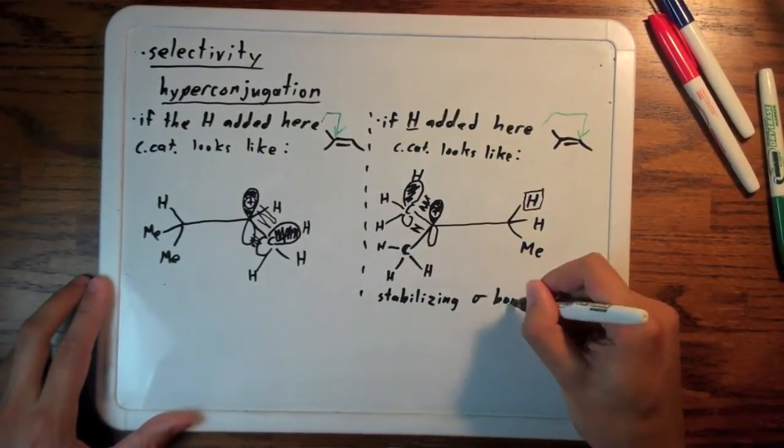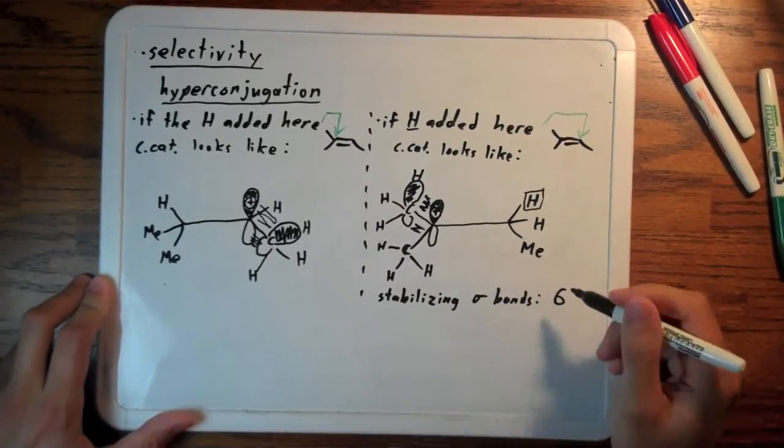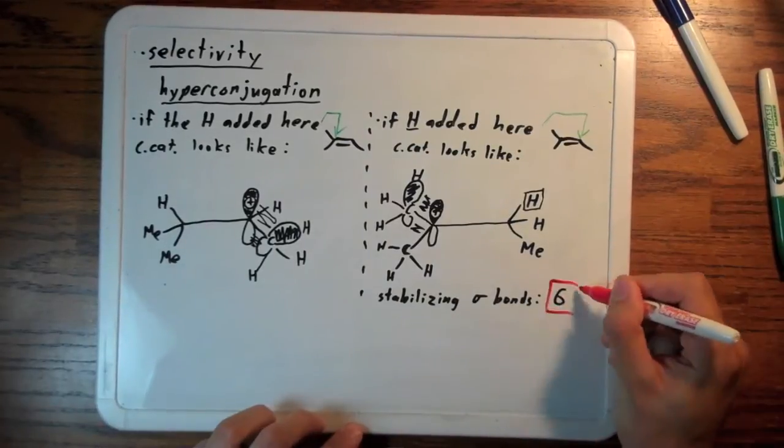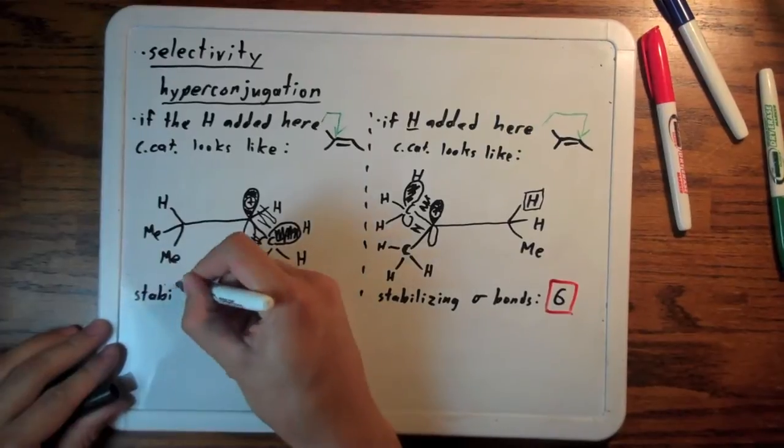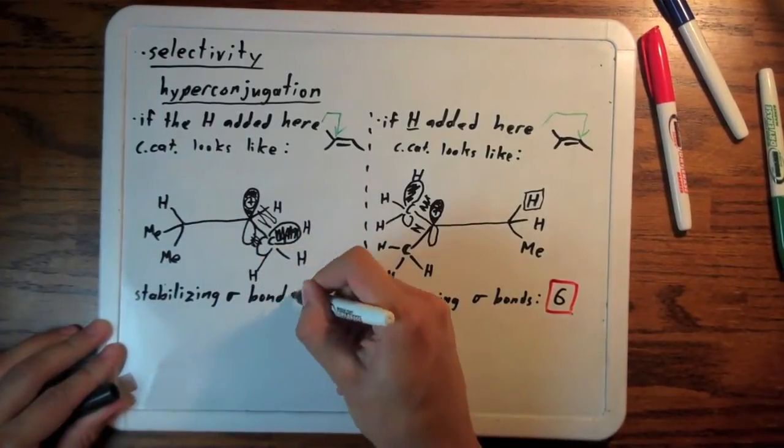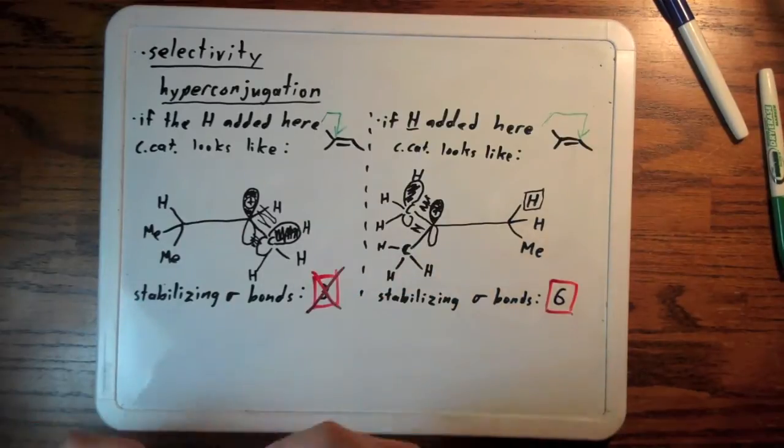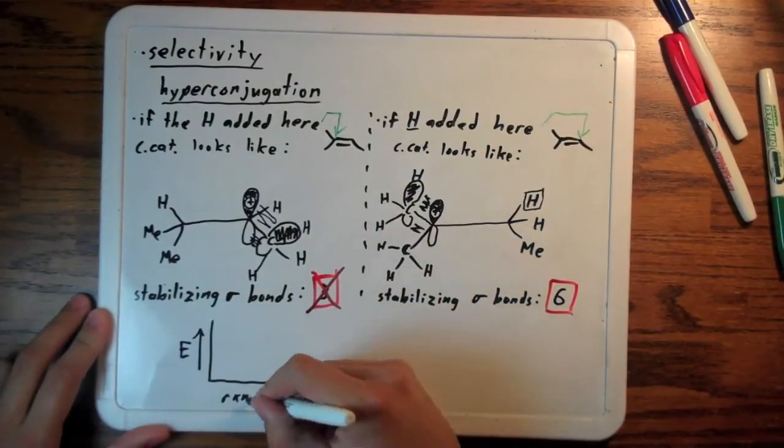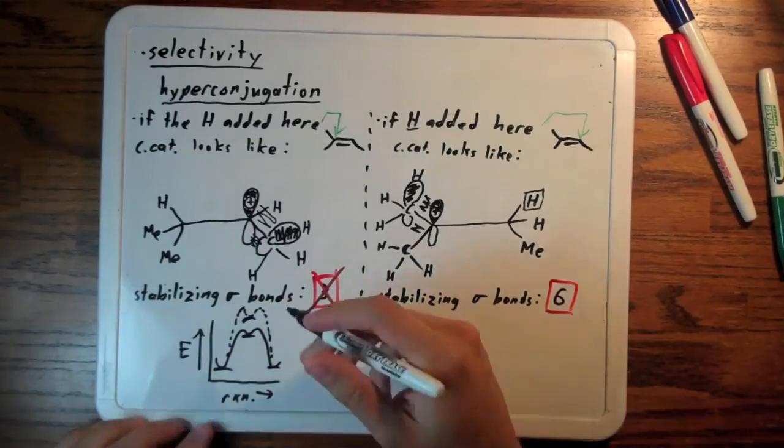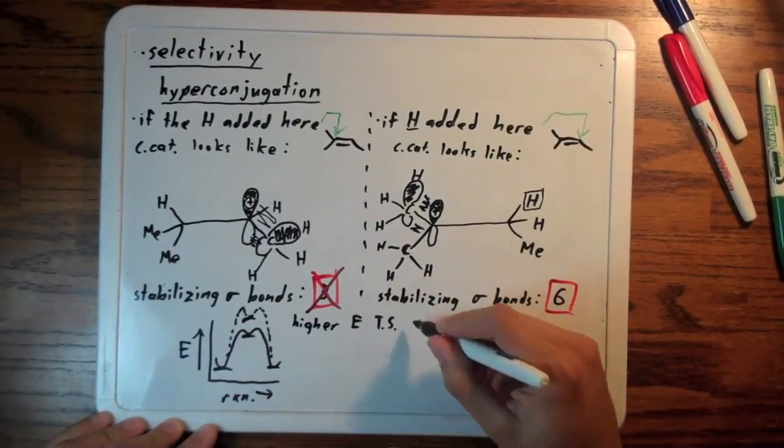In this case, the number of stabilizing sigma bonds directly next to the empty p orbital is six. On the other side, in the other case, it's only three. That hydrogen does not count; its sigma bond is orthogonal to the empty p orbital. So the species that is more stabilized has a lower transition state energy, meaning that's the one that happens.